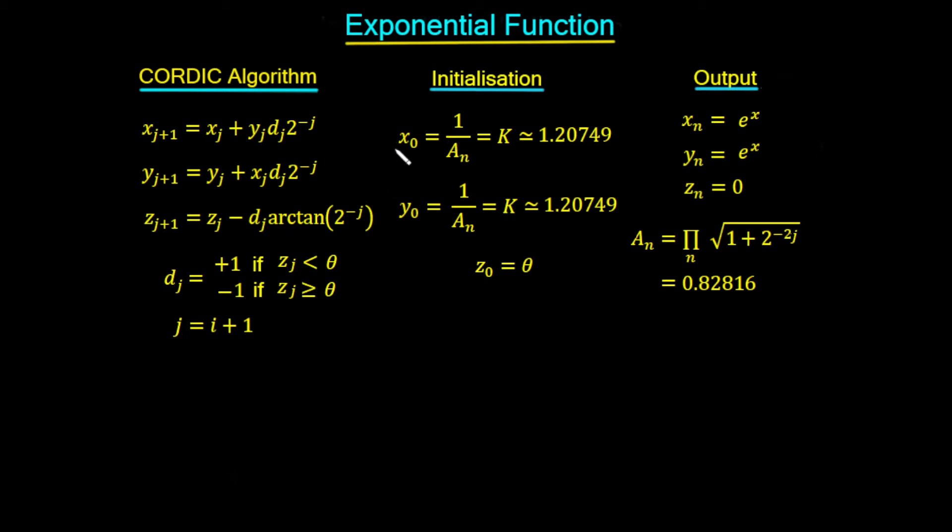The only difference is that the value for y0 now is 1 upon Kₙ, which is our gain factor of 1.20749 for the hyperbolic mode.